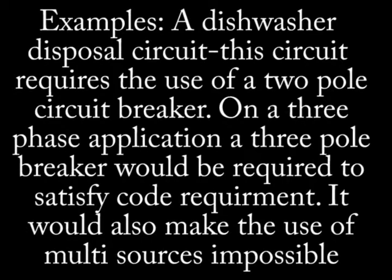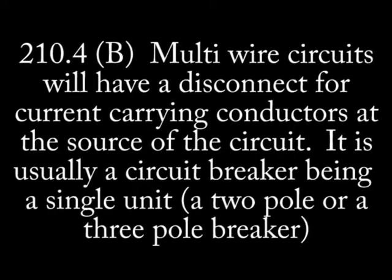The same applies to a multi-wire circuit originating from a three-phase panel. A three-phase air conditioner requires the use of a three-pole breaker. Article 210.4 paragraph B: multi-wire circuits will have a disconnect means for ungrounded conductors at the source of the circuit. This subsection points out that on multi-wire circuits a single unit breaker must be used.